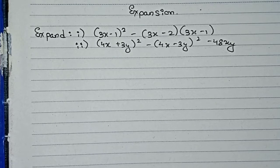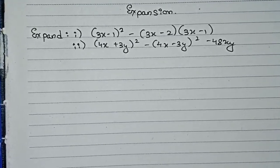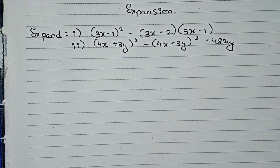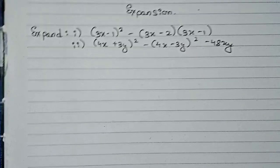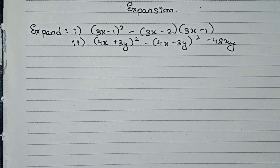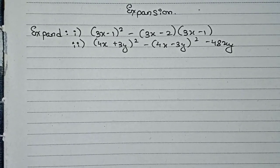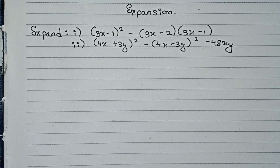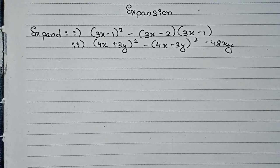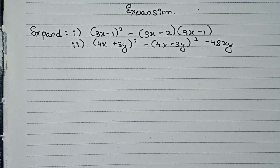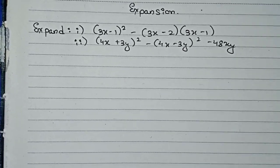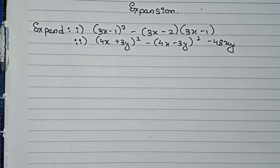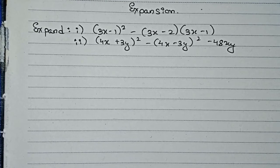Hello guys, welcome to this video. In this video we are going to solve expansion problems. Our questions are: expand (3x-1)² minus (3x-2) multiplied by (3x-1), and (4x+3y)² minus (4x-3y)² minus 48xy. For both these questions we have to use different identities in the same question — that means for solving one question you have to use two identities.